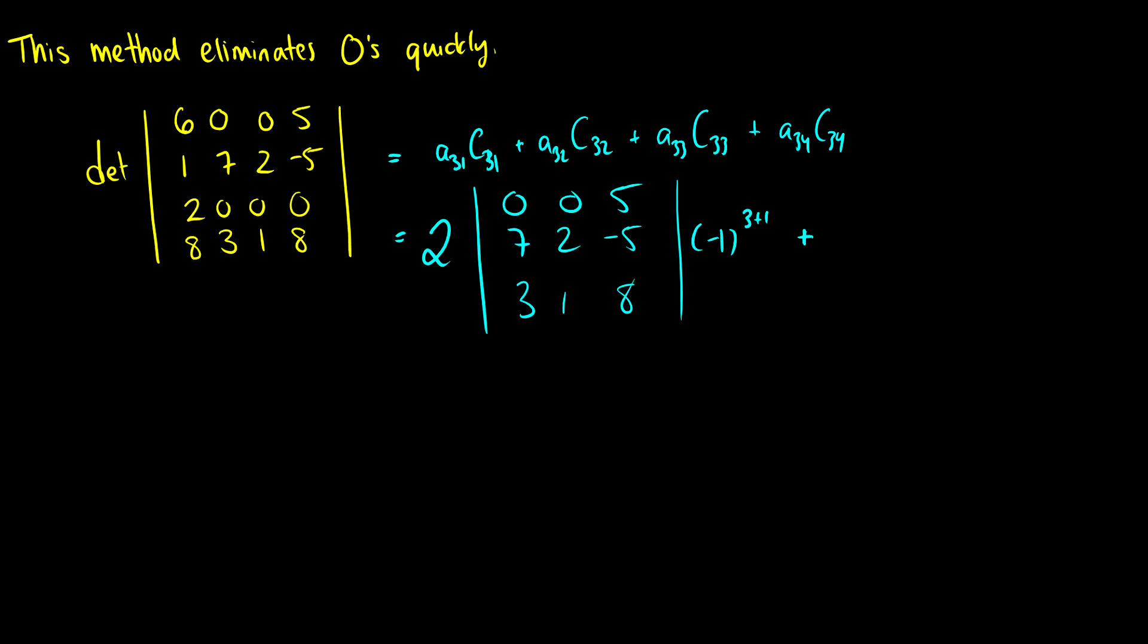That's A31C31. Now we need to do the next one. A32 is 0, so that's done. A33 is 0. A34 is 0. So those will all be 0. Now with one operation and one calculation, we have reduced this to 2 times the determinant of 0, 0, 5, 7, 2, negative 5, 3, 1, 8.